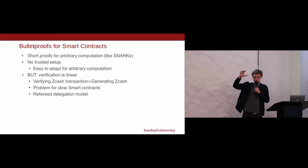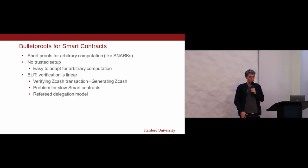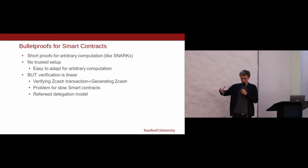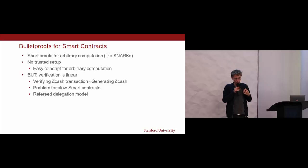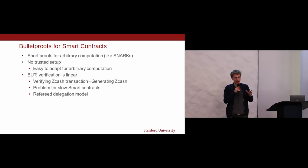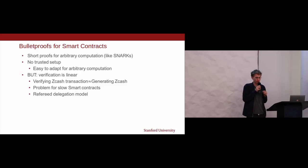Verifying a Bulletproof ultimately boils down to one large multi-exponentiation. For a circuit of size n, the multi-exponentiation is of size 2n — you have generators g1 to g2n raised to some exponents, and this is the majority of the verification work. Computing multi-exponentiation efficiently is a well-studied problem, and it turns out it scales sublinearly. For a 64-bit range proof, verification takes roughly 4 milliseconds, which we've gotten down to around 2.5 milliseconds.